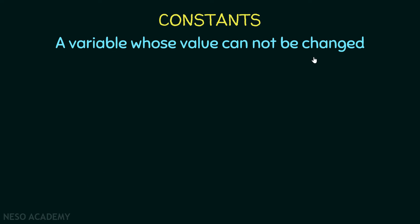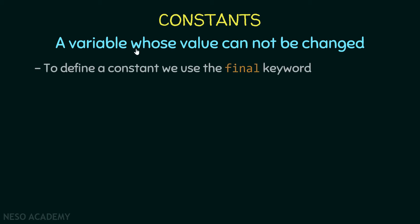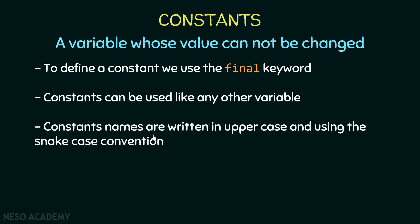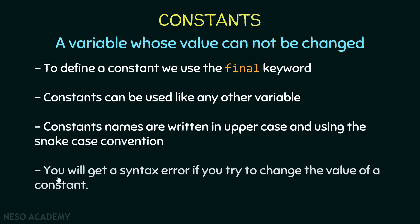So if you want a variable with a constant value so that the value cannot be changed, then you will use a constant. To define a constant we use the final keyword, as you will see in a little bit. Also, a constant can be used like any other variable. To name constants, we write them in uppercase and use the snake case convention — the name of the constant will be all uppercase and between each word we put an underscore. This is optional but it is how constants are named in Java.